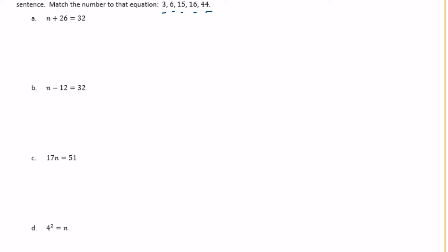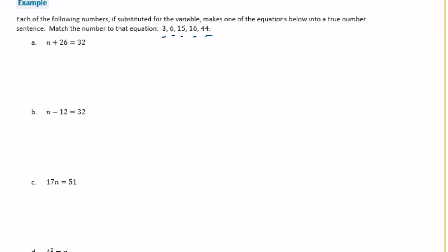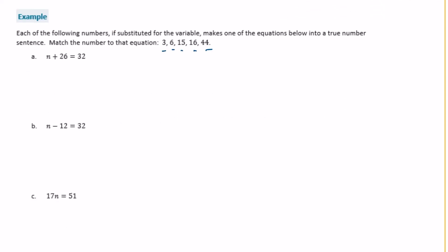So let's start with N plus 26 is equal to 32. So what do we need to put in place of N to make this true? So what plus 26 equals 32? So we can figure that out by doing 32 minus 26 would be 6. So N must be equal to 6. I'm going to cross out 6 because we used it.